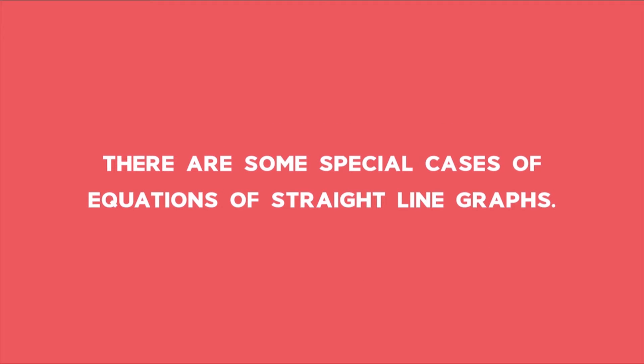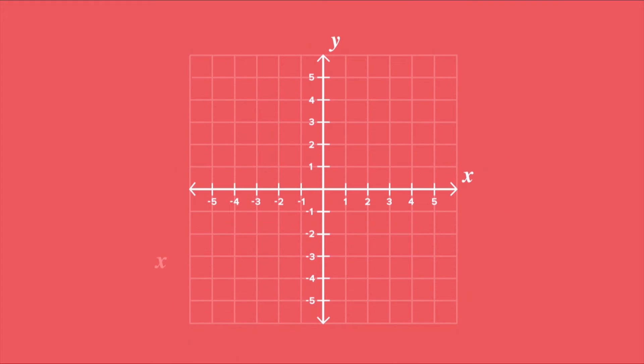There are some special cases of equations of straight line graphs. For example, when x equals a, where a is an element of real numbers, we have a vertical straight line perpendicular to the x-axis and parallel to the y-axis. The gradient of this line is undefined. For example, x equals 3.